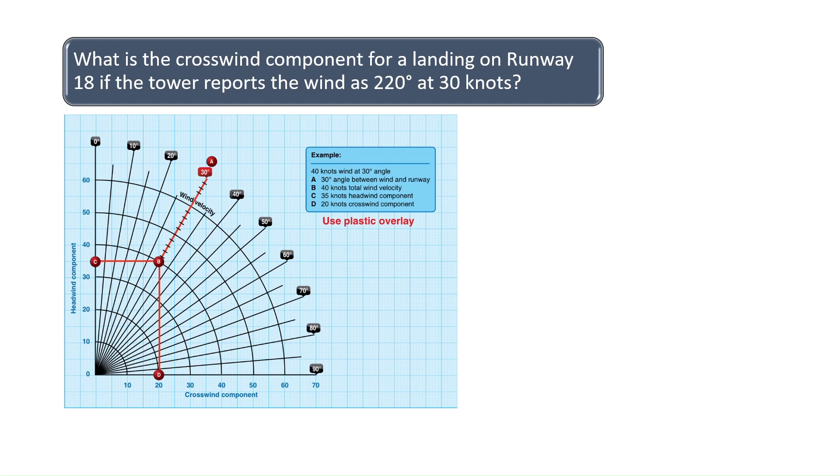What is the crosswind component for a landing on runway 18 if the tower reports the wind as 220 degrees at 30 knots?